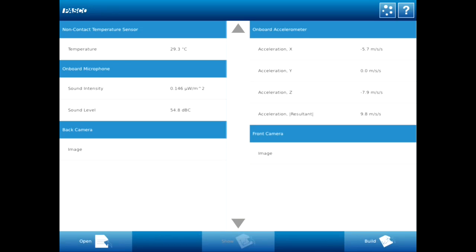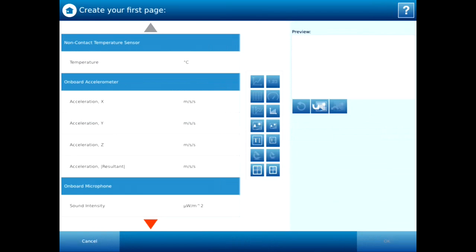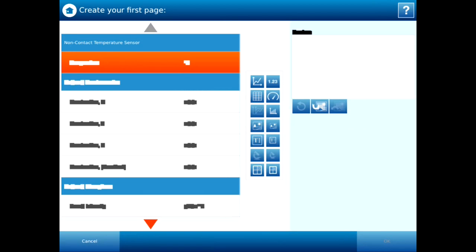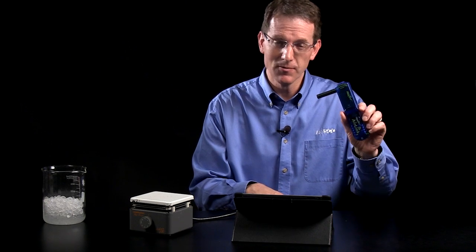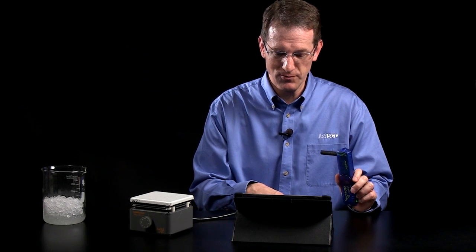So to do this, I'm going to go under Build, and on the Build screen, I select Temperature. And you can see there's a number of other readings too. Based upon the tablet, it has all these built-in sensors, and so you can actually build graphs with those sensors. But we're going to use a non-contact temp sensor for this one.